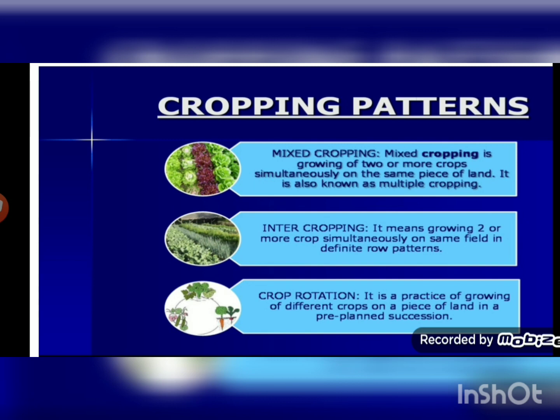Mixed cropping is the growing of two or more crops simultaneously on the same piece of land, also known as multiple cropping. The crops are selected in such a way that their nutrient requirements are different from each other, so that maximum nutrients from the soil can be obtained by the plants and more agricultural produce can be obtained.